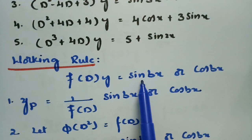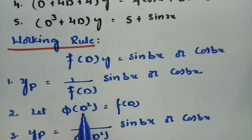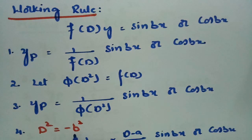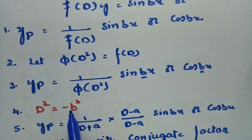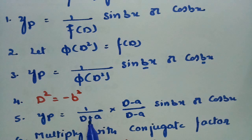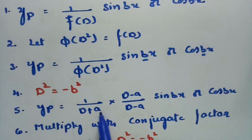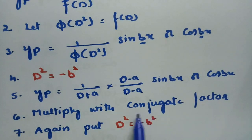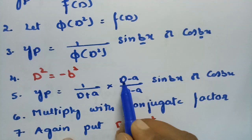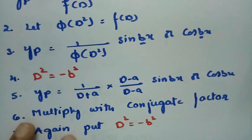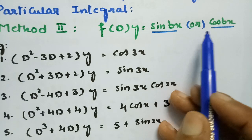The working rule for sin(bx) or cos(bx): wherever we find D², we replace it with −b², where b is the coefficient of x. If D² does not appear directly, we multiply by the conjugate factor — for example, if we have 1/(D + a), we multiply numerator and denominator by (D − a), giving D² − a² in the denominator, and then replace D² with −b². If D appears in the numerator, we apply the derivative accordingly.